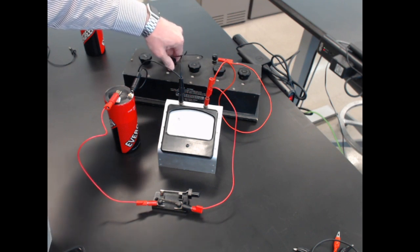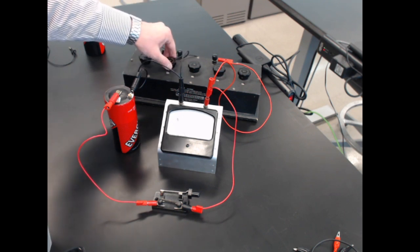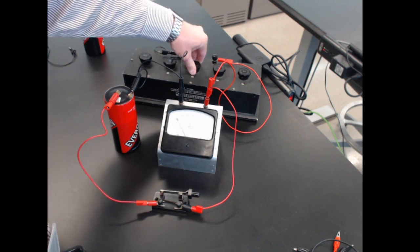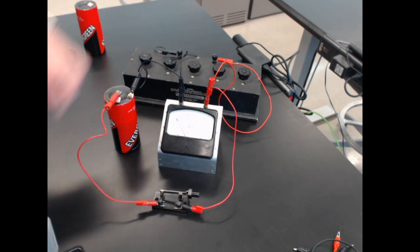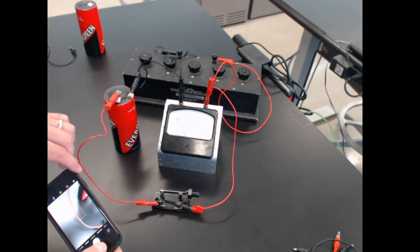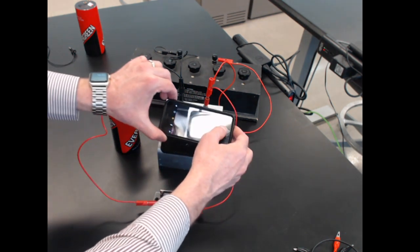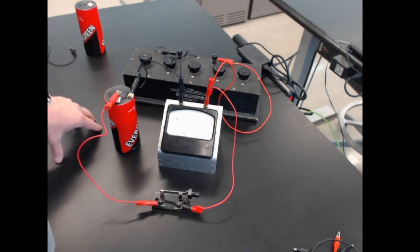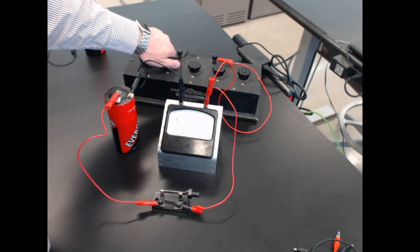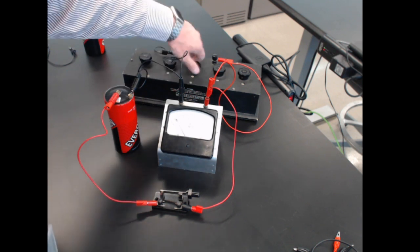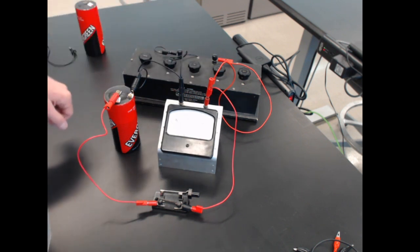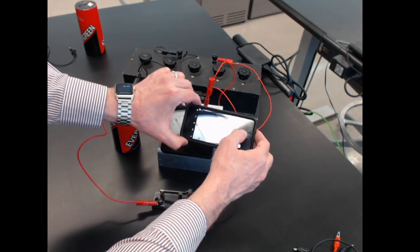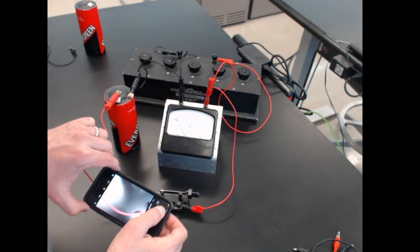And let me go up to 900, down to 900 ohms, 800, 700. That's too little. 750 works. 0.5 to 0.57 volts. 650, 550. 550 takes me down to 0.6.